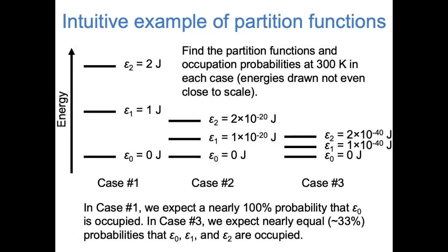Before calculating numbers, think about how you expect these cases to come out in terms of occupation probabilities. In case one, the energy states are spaced really far apart relative to kBT, so we expect a nearly 100% chance that the ground state epsilon zero is occupied. In case three, the three energy states are so close together they might as well be equal, so we expect them to be nearly equally occupied with about one-third probability each. Case two is in between — the energy spacing is similar to kBT, so the ground state will be more occupied, but all three states should have some probability of occupation.